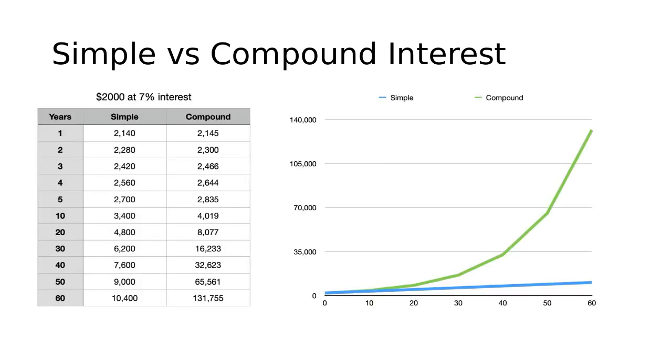So in the chart on the left, what we see is for the number of years the money's been invested, the total value of the investment. And we see that for the simple interest column, and we also see it for the compound interest column. And on the right, we have a graph of those numbers.